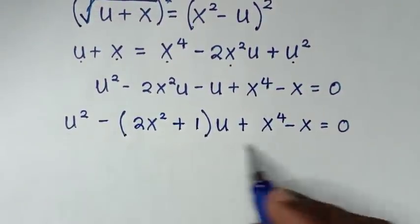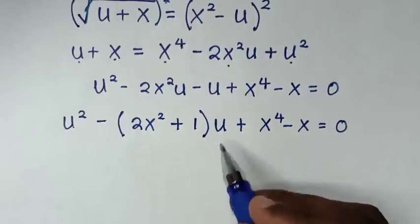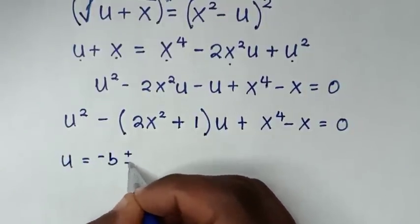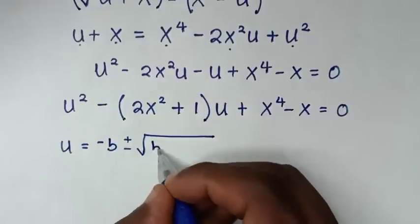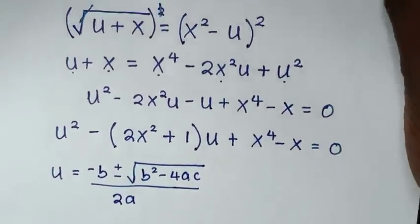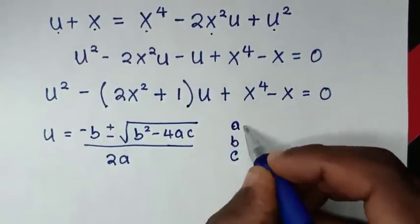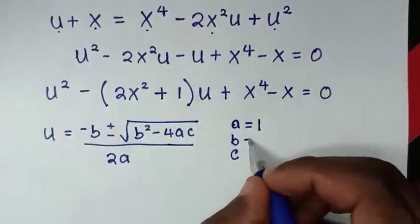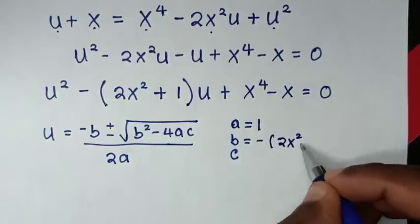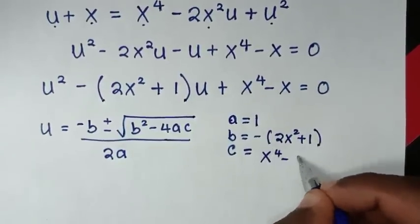This equation is a quadratic equation in terms of u, where we have u squared and u. We solve by the quadratic formula: u equals negative b plus or minus square root of b squared minus 4ac, over 2a. Here a is the coefficient of u squared, which is 1; b is the coefficient of u, which is negative bracket 2x squared plus 1; and c is the constant, which is x to the power 4 minus x.